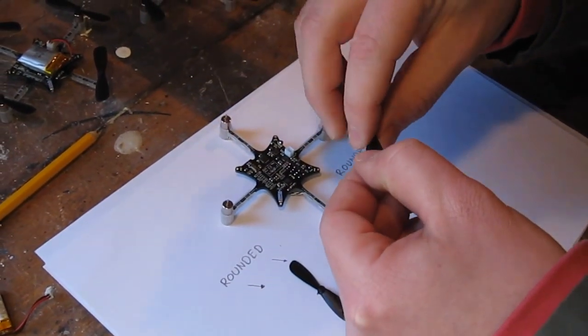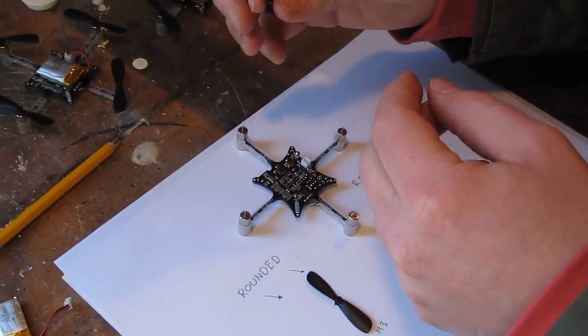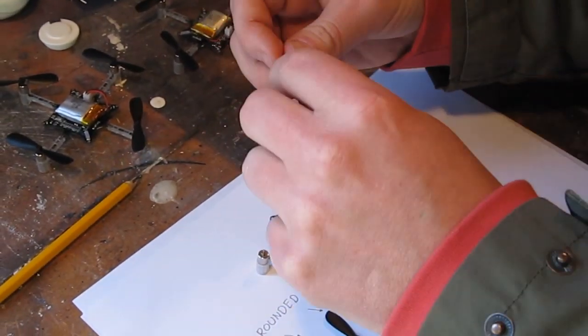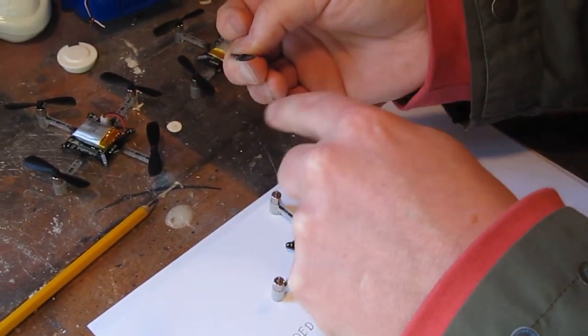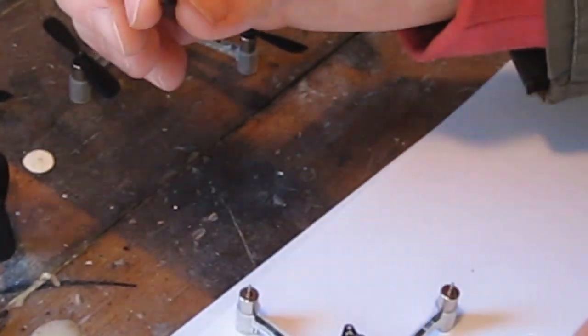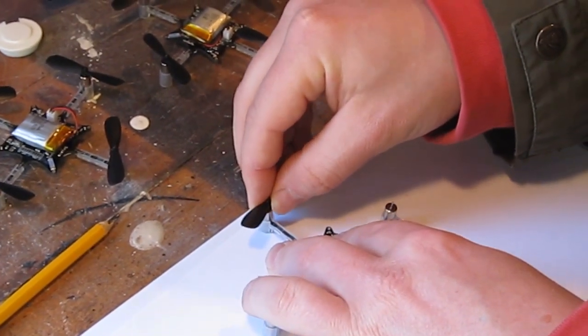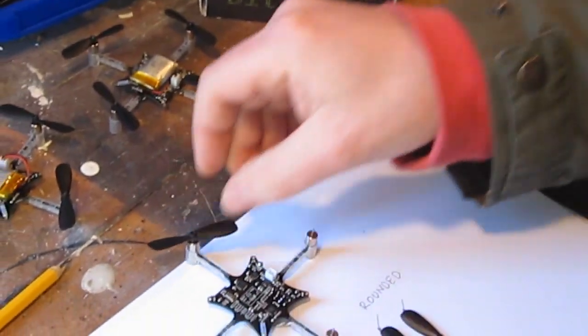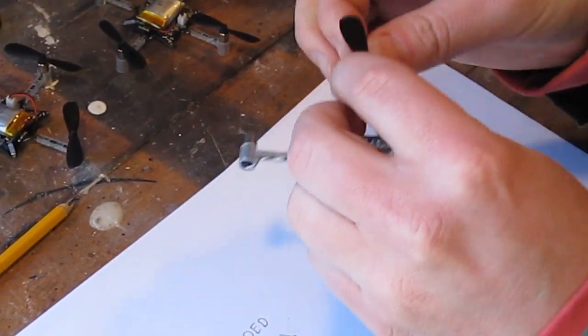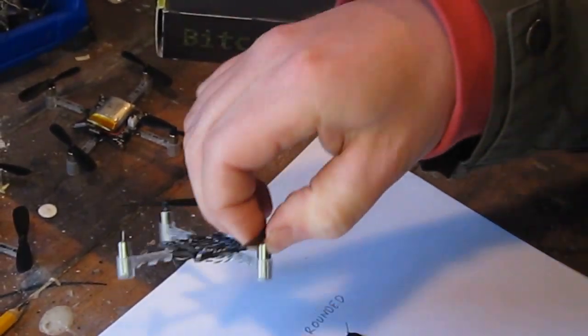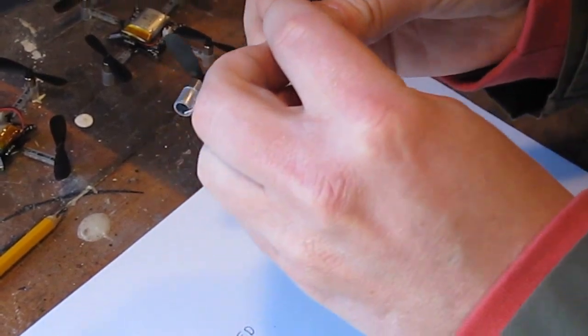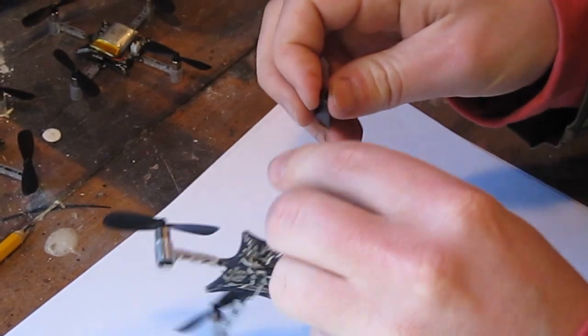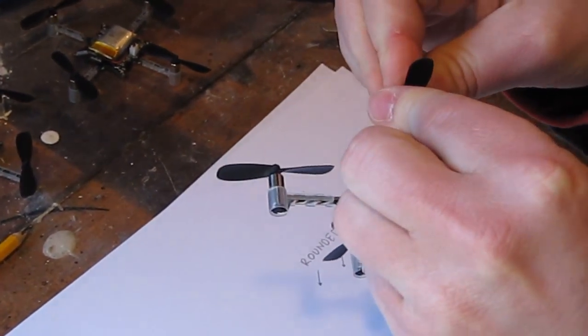So motor 1. And if you look at the motors you can see that, if you look at the propellers you can see that they are curved upwards. So if you turn them around, these are curved downwards. And they should be in this direction. So let's start with motor 1, motor 3, and motor 2, motor 4.